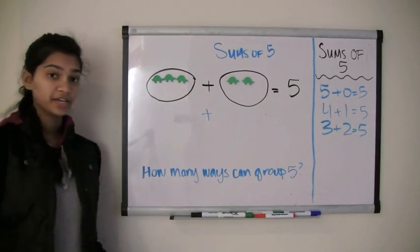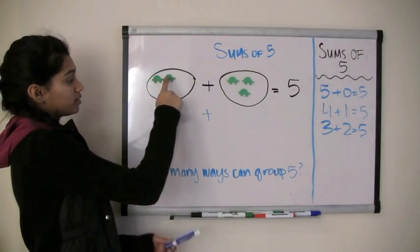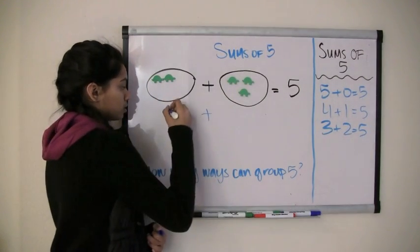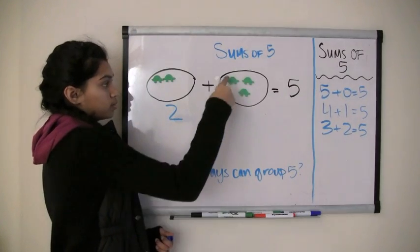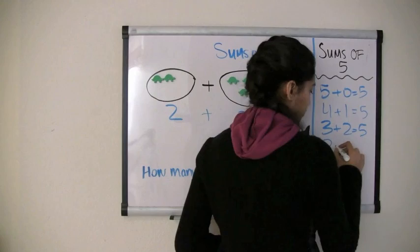To find our next sum, we have to move another turtle over. And now we have one, two turtles plus one, two, three turtles. So our next sum is one plus four equals five.